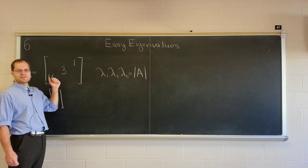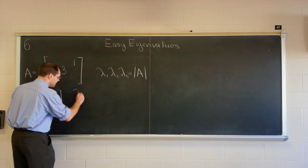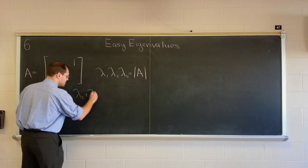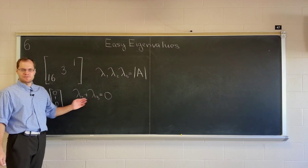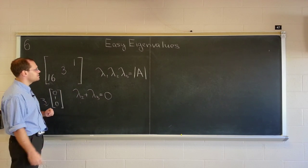And because one of the eigenvalues is three, the other two add up to zero. So the sum of the other two eigenvalues is zero, which means they're opposites of each other. Let's keep that in mind, they're opposites.